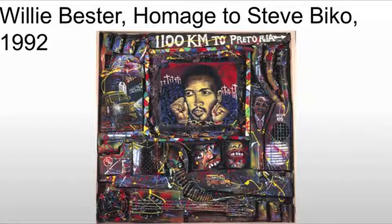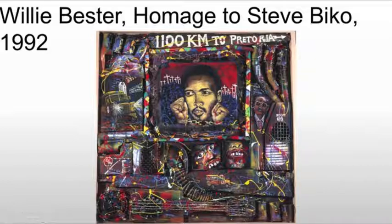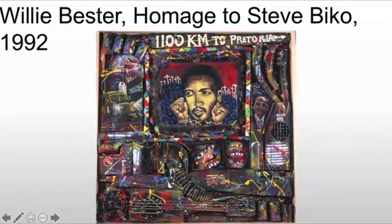There's a story to be told. We get the sense of someone who is being tortured and mistreated. Room 619, painted over an intercom, gives you the sense of a jail cell — someplace dangerous or foreboding. 1,100 kilometers to Pretoria, and we see the same thing here next to an ambulance, referring to Steve Biko being transported.